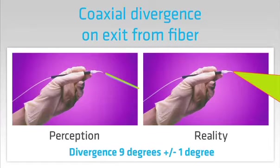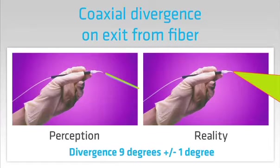You may think that the beam travels from the tip only in one forward direction, but in reality the beam spreads out in the shape of a cone with a divergence angle of about 9 degrees from the center, or 20 degrees altogether. Because of this divergence, the further away we are from the tissue, the less intense the beam.